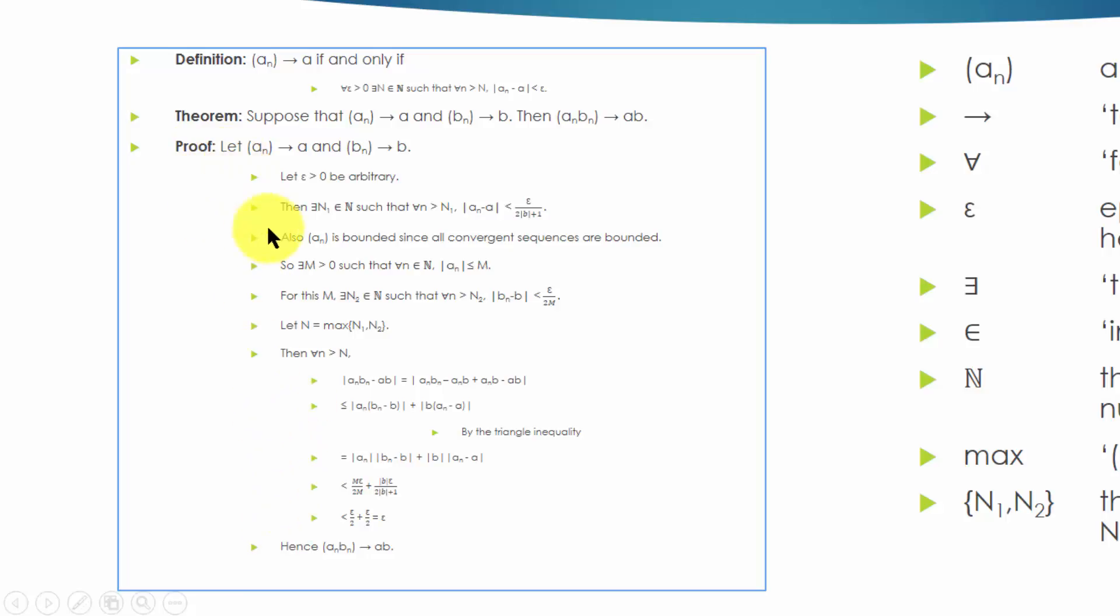The proof is a logical argument that concludes that the theorem is true. The proof first assumes that the two sequences A-N and B-N satisfy the definition, and then concludes that the multiplied sequence A-N times B-N satisfies the definition too, thus proves the theorem.